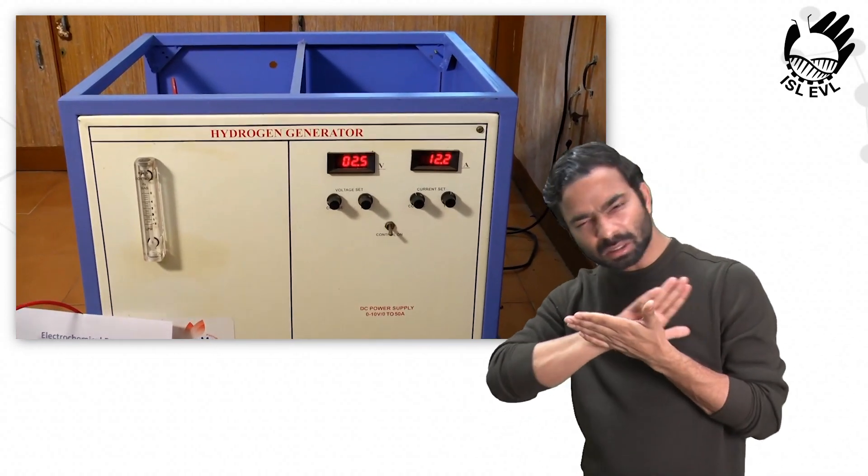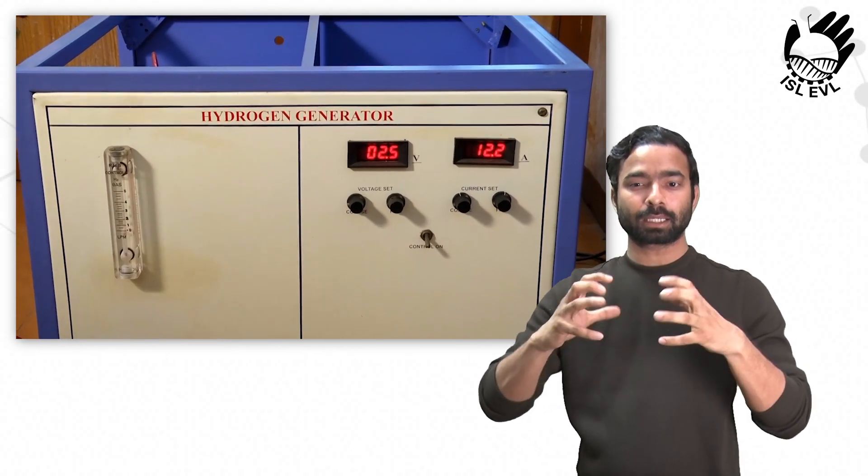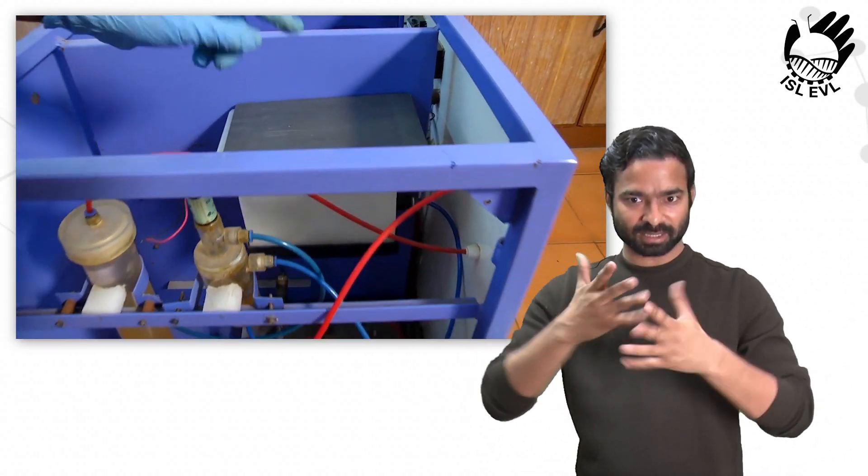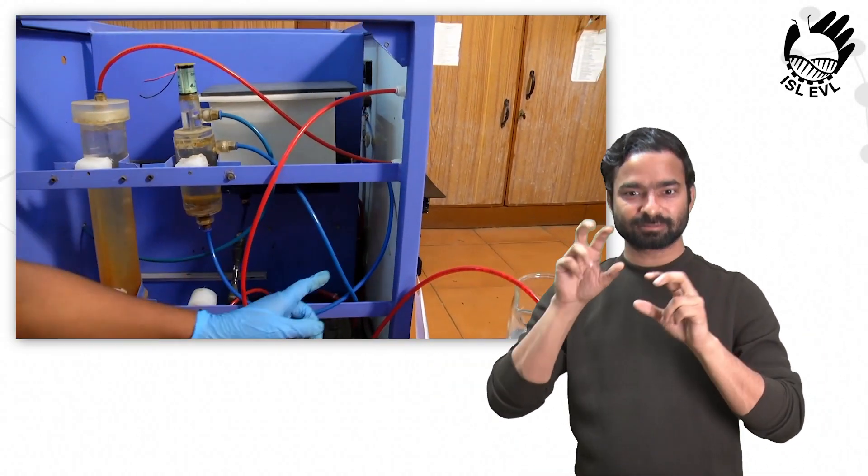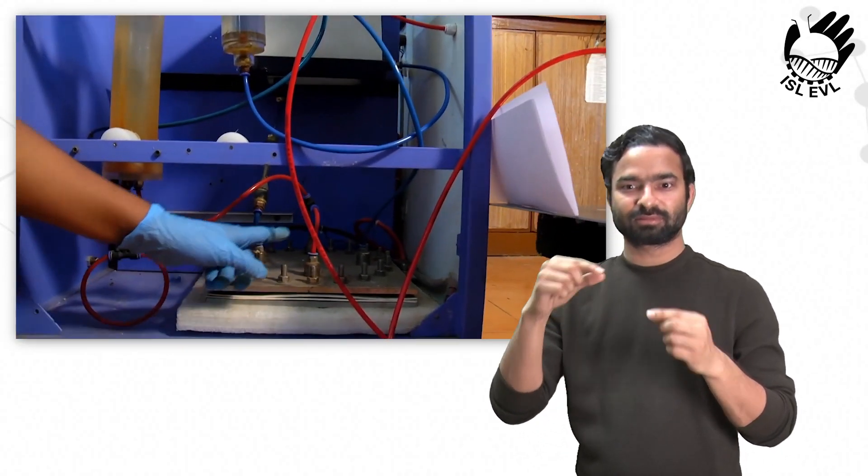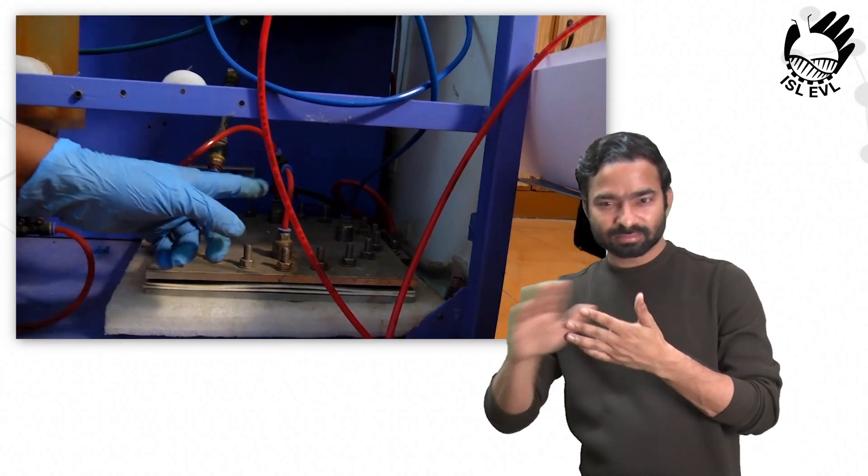What we see here is a PEM hydrogen generator developed at CSIR-CECRI. This compact hydrogen generation unit consists of electrolyzer stack, piston pump, water supply provision, gas scrubber, DC rectifier, and electronic control panels.